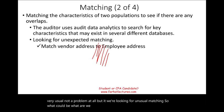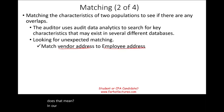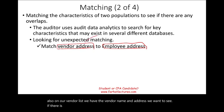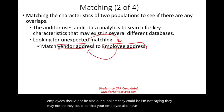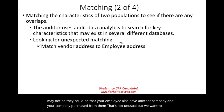What do we mean by unusual matching? For example, we can match the vendor address to the employee address. In our database we have payroll, which has the employee name and address. Also on our vendor list we have the vendor name and address. We want to see if any vendor address matches an employee address. Our employees should not also be our suppliers — they could be — but we want to know. Looking for unusual matching here means we're looking for fraud.